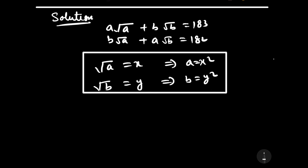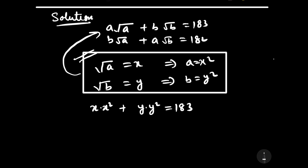Now we substitute these values into the original first equation. We get x·x² plus y²·y equals 183, which simplifies to x³ plus y³ equals 183.